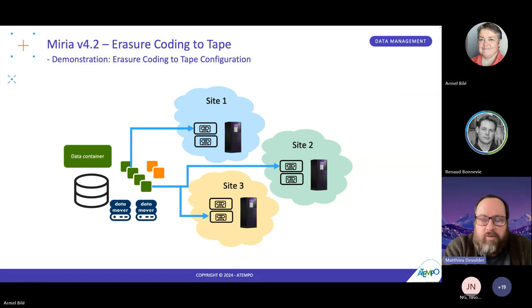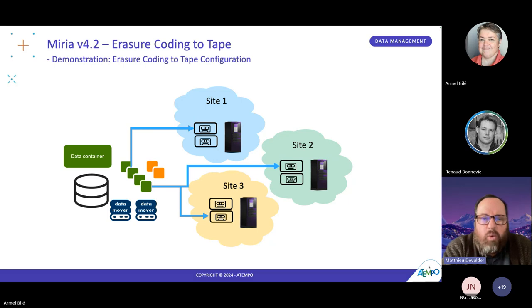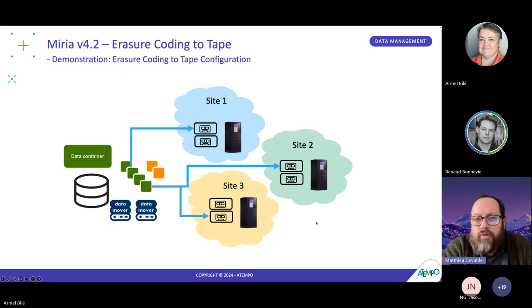Here is the topology we will demonstrate. We've got a Miria server with a data mover on each location across three sites — site one, two, and three — each with a data mover alongside a tape library featuring four tape drives. One of the main benefits, aside from cost savings, is resiliency and especially disaster tolerance. Even if you lose one of the three locations due to a fire, flood, or earthquake, you will still be able to recover all the data using the parity chunks.